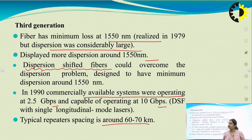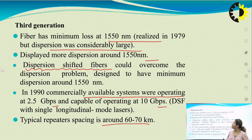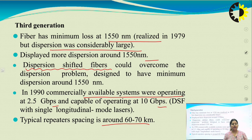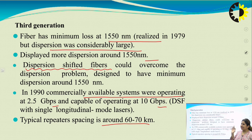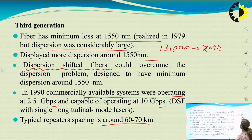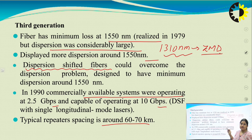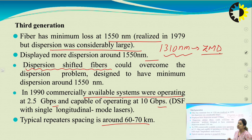Comparing 1310 nm and 1550 nm: at 1550 nm, losses are very low but there is some dispersion that can be compensated through dispersion compensating fiber. At 1310 nm, there is very low dispersion — this wavelength is called the zero material dispersion point — but losses are higher. At 1550 nm, losses are the lowest, making it the better choice for long-distance transmission.